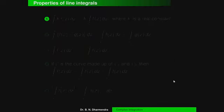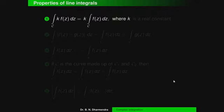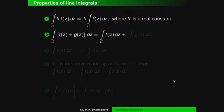Some properties of complex line integrals: Property 1 — ∫_C k·f(z)dz = k·∫_C f(z)dz, where k is a real constant that can be taken outside the integral. Property 2 — ∫_C [f(z) ± g(z)]dz = ∫_C f(z)dz ± ∫_C g(z)dz, splitting the integral with the same sign.